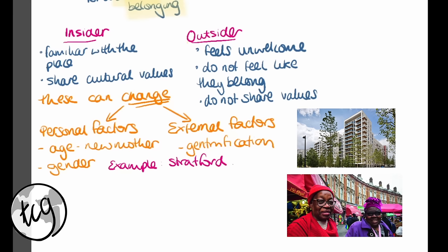Another example is the Windrush generation. When they first moved to London there was lots of conflict and racism. However, now Brixton has a really big Afro-Caribbean community with celebrations and they are very much insiders to the local area. So have an idea, particularly with Changing Places, that these places do change and people's attachment to places also changes.